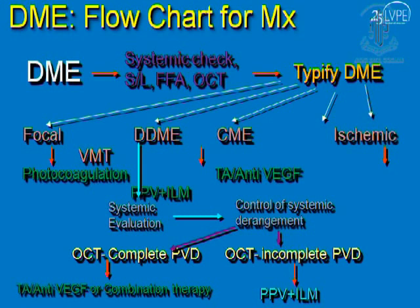The main challenge in diabetic macular edema is diffuse diabetic macular edema. Whenever there is more than two disc areas of macular retinal thickening, we coin that as diffuse DME. When it is bilateral, there is a very high chance of systemic derangement, so thorough systemic workup is essential. Once systemic status is stabilized, assess whether there is any PVD or vitreous traction — it can be point traction or broad-based traction. If traction is present, the answer is surgical. If no traction and a complete PVD is present, then laser, combination laser, anti-VEGF, or steroid therapy are the options available.